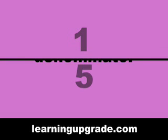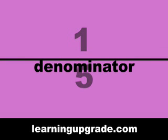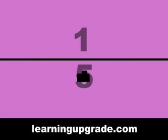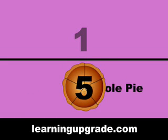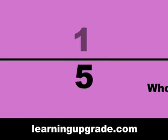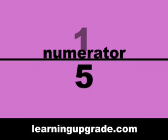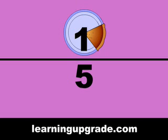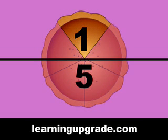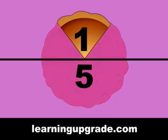A fraction has the denominator — that goes below the line. It shows how many slices the whole pie has. Five! A fraction has the numerator — that goes above the line. It shows how many slices I have. One!